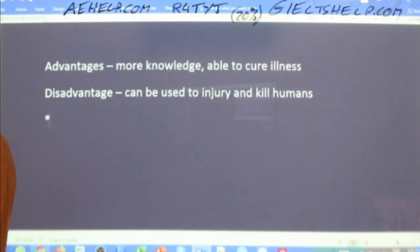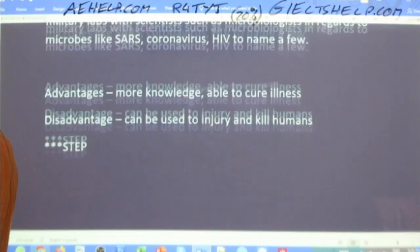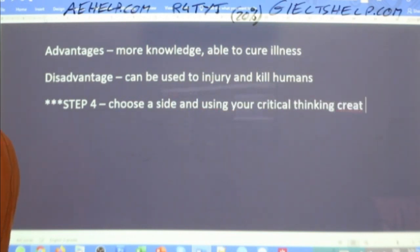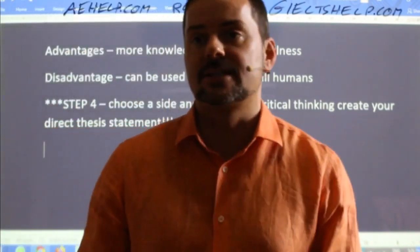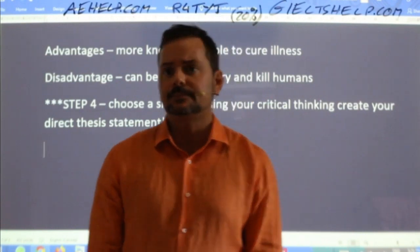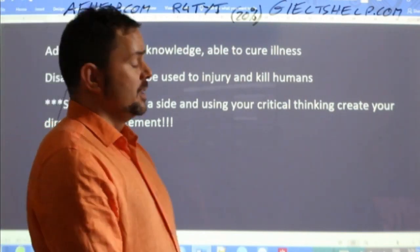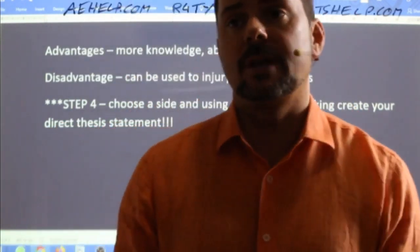As the next step — step four — you have to choose a side. Using your critical thinking, create your direct thesis statement. Always choose the side that's easiest for you to argue. My question before choosing is: throughout history, has microbial experimentation or research benefited or harmed society? If I think about it, there are eight billion people on earth and we suffer from illness much less than our forefathers because we have cures, we live longer lives, we're able to live well into our old age because we have medicines.